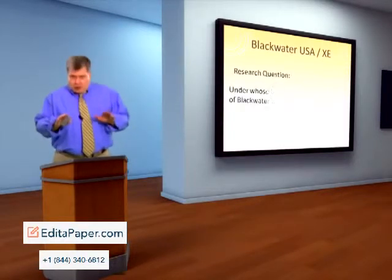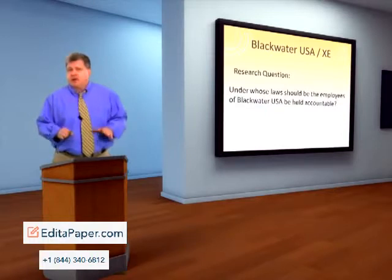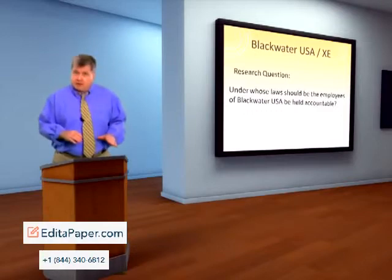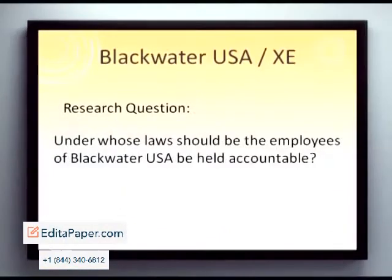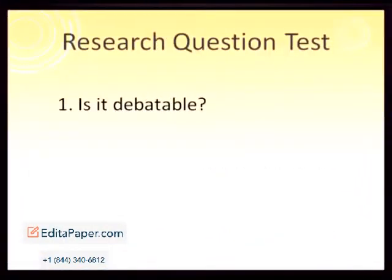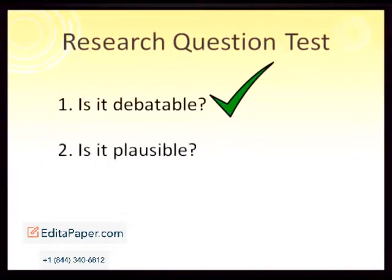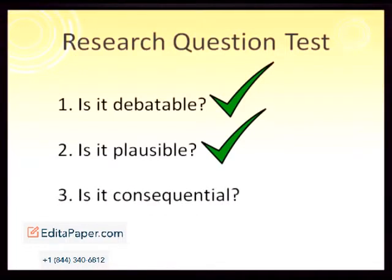Here's the question: Under whose laws should the employees of Blackwater USA be held responsible for their conduct in Iraq? Is that a good question? Let's test it. First, is it debatable? Yes — the Iraqi government, the U.S. Congress, and world courts are all debating what laws, if any, should apply: the Uniform Code of Military Justice, Iraqi law, the Geneva Conventions, U.S. criminal law, U.S. civil law — all are up in the air. Next, is this question plausible? Yes — all sides are offering strong legal claims to support their position. Finally, is this topic consequential? Yes — it's really a matter of life and death, justice and injustice, and the court of world opinion is watching and waiting the outcome of this debate.